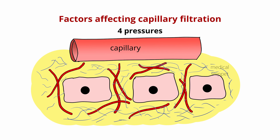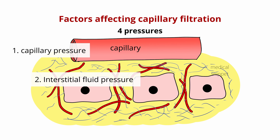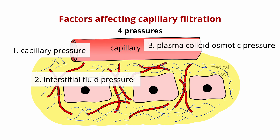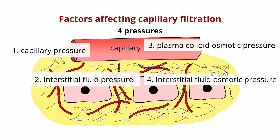There are four pressures that regulate the fluid movement through the capillary membrane. The first pressure is capillary pressure, which pushes the fluid outwards through the capillary membrane. The second pressure is interstitial fluid pressure, which tends to push the fluid into the capillaries. The third pressure is capillary plasma colloid osmotic pressure, which tends to cause osmosis of fluid into the capillaries from the interstitial spaces. The fourth pressure is interstitial fluid colloid osmotic pressure, which tends to cause osmosis of fluid into the interstitium from the capillaries.